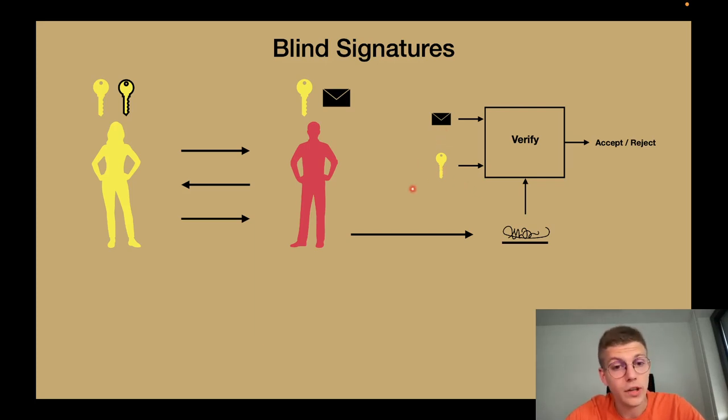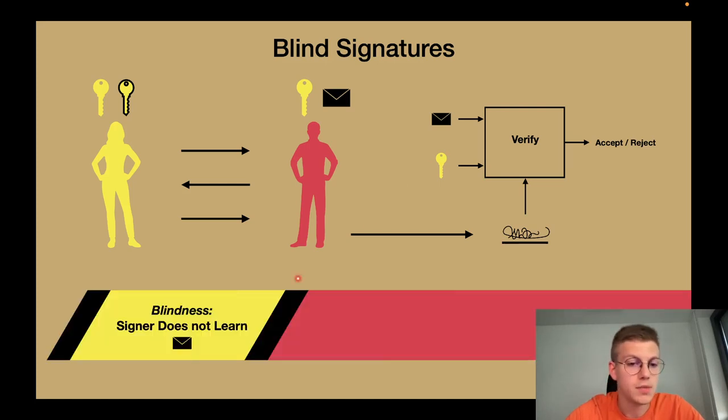In terms of security we want to have two properties. The first one is blindness which says that the signer does not learn what he is signing so he cannot link the interaction to message signature pairs. And the second property says that we actually need the signer to generate the blind signature. We cannot generate the blind signature without interacting with the signer.